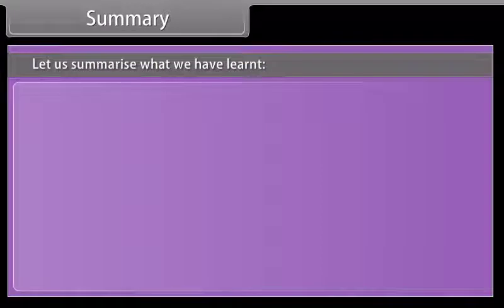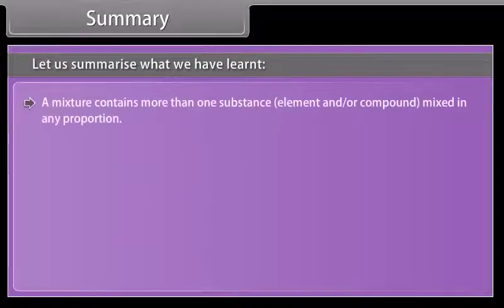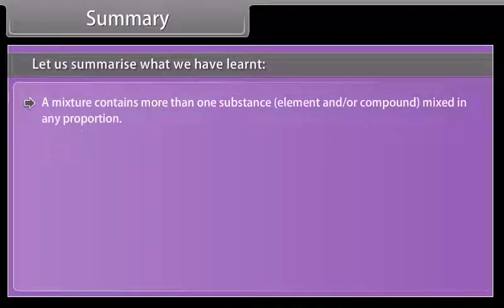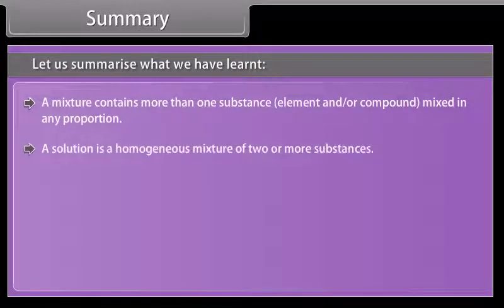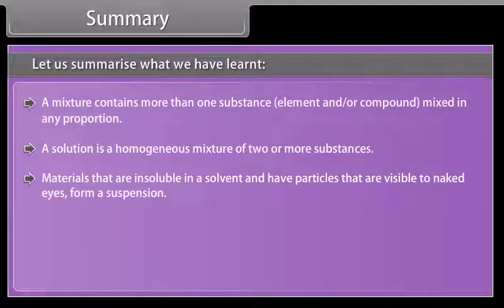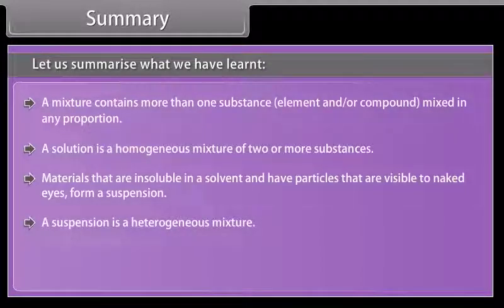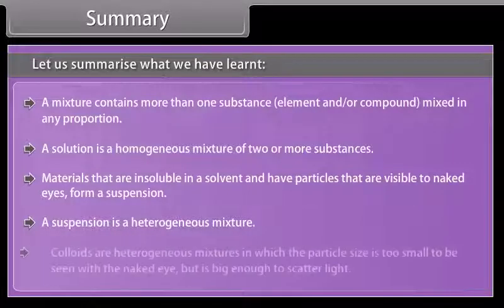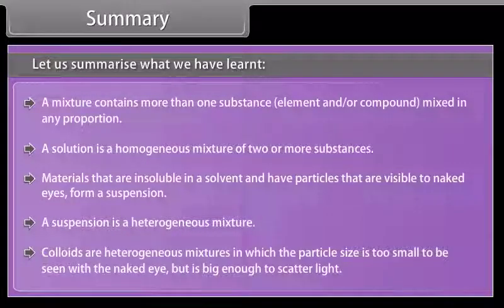Summary: A mixture contains more than one substance — element or compound — mixed in any proportion. A solution is a homogeneous mixture of two or more substances. Materials that are insoluble in a solvent and have particles visible to the naked eye form a suspension, which is a heterogeneous mixture. Colloids are heterogeneous mixtures in which the particle size is too small to be seen with the naked eye but large enough to scatter light.